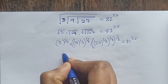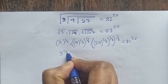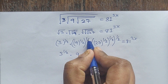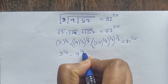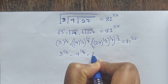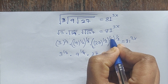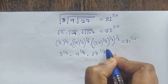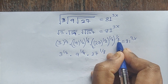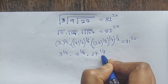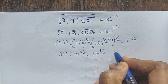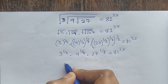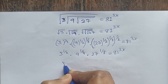Now: 3 to the power of 1/2, times 9 to the power of 1/2 times 1/2 — which equals 1/4 — times 27 to the power of 1/2 times 1/2 times 1/2 — which equals 1/8. So 2×2=4, 4×2=8. So we have 3 to the 1/2, 9 to the 1/4, 27 to the 1/8, equal to 81 to the power of 3x.